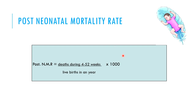Post-neonatal mortality rate includes deaths from four weeks up to 52 weeks, divided by the total number of live births in a year in that community, multiplied by 1,000. The infant mortality rate can be calculated by summing the early neonatal mortality rate (up to 7 days), the late neonatal mortality rate (up to one month), and the post-neonatal mortality rate (one month to 52 weeks). This is a very important Viva question.